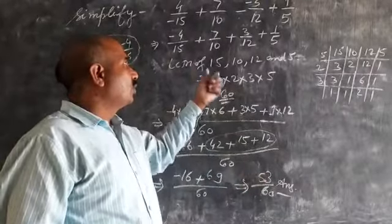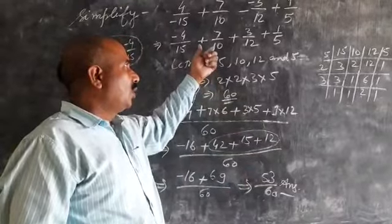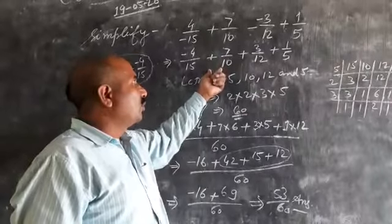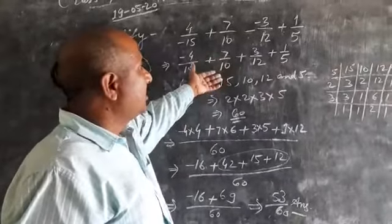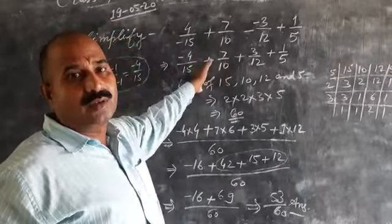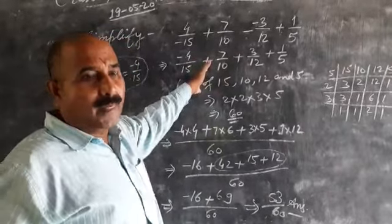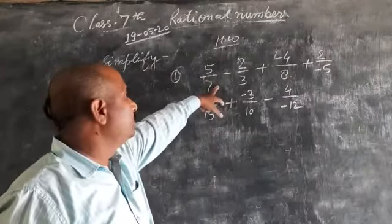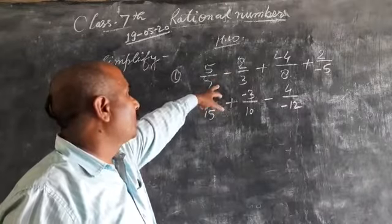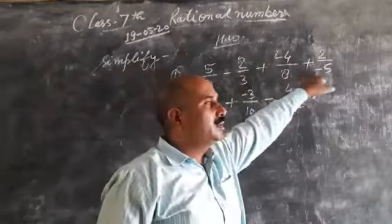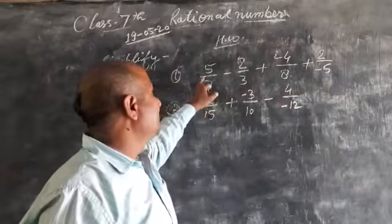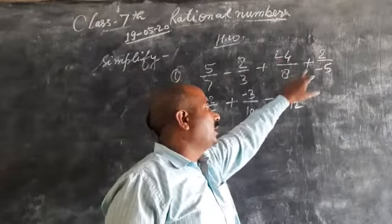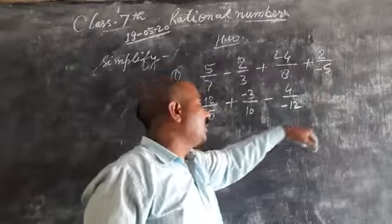Now, I want to give you two more questions of this type to solve yourself. After that, you will note down the homework. Students, these two questions for you. In first question, there are four rational numbers with different signs. The first, 5 by 7 minus 2 by 3 plus minus 4 by 8 plus 2 upon minus 5.